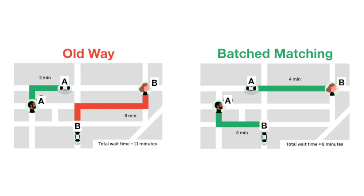Using the old way with the nearest driver to the nearest passenger, the total wait time was 11 minutes between both requests. But using batch matching, they switch up the drivers and the total wait time goes down to 8 minutes. So batch matching reduces the overall wait time by 3 minutes.